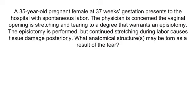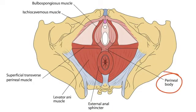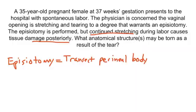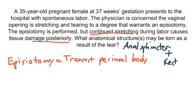Practice question: A 35-year-old pregnant female at 37 weeks gestation presents with spontaneous labor. The physician performs an episiotomy because the vaginal opening is stretching and tearing, but continued stretching during labor causes tissue damage posteriorly. What anatomical structures may be torn? In an episiotomy, the perineal body is transected. The perineal body lies anterior to the anal sphincter, so continued tearing posteriorly can damage the anal sphincter. Looking at the sagittal view, tearing can also damage the rectum. The answer is the anal sphincter and the rectum.